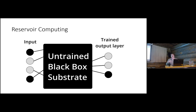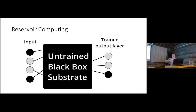You just need a linear trained output layer to extract the relevant information. It's quite a powerful method because you can treat the whole thing as an essentially untrained black box — you set it up but you never adjust it. People have done very weird things with it, like using a bucket of water with waves on the surface that computes for you. I'm working with cellular automata as my reservoir.